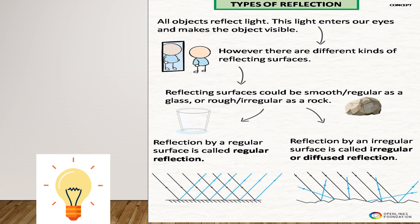Now let's look at the types of reflection more closely. Whenever we have a plane surface, the incident rays — which are the light rays falling on the surface — hit an opaque object and are reflected back. For a plane surface, the reflected rays are also parallel to each other, just as the incident rays are parallel. Because of this, we get regular reflection and a clear image. For diffused reflection, instead of a plane surface we have an uneven surface, so though the incident rays are parallel, the reflected rays are not parallel to each other and cannot form a clear image.